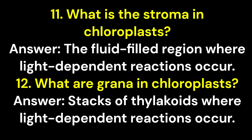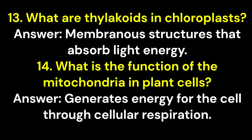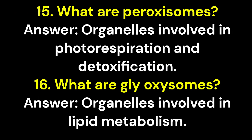11. What is the stroma in chloroplasts? Answer: The fluid-filled region where light-dependent reactions occur. 12. What are grana in chloroplasts? Answer: Stacks of thylakoids where light-dependent reactions occur. 13. What are thylakoids in chloroplasts? Answer: Membranous structures that absorb light energy. 14. What is the function of the mitochondria in plant cells? Answer: Generates energy for the cell through cellular respiration.